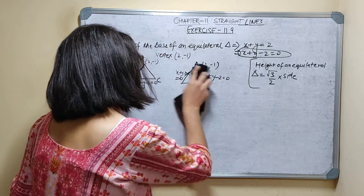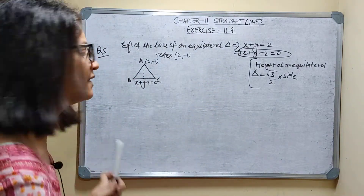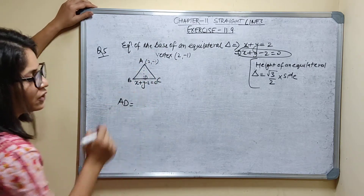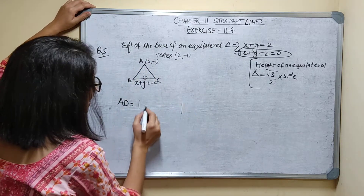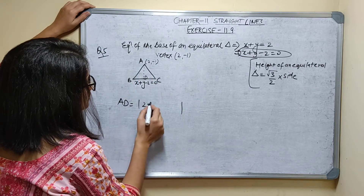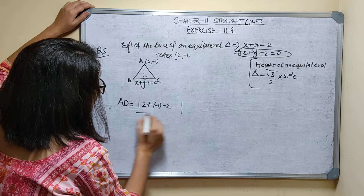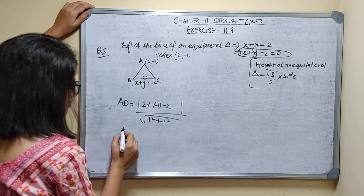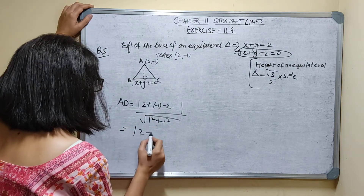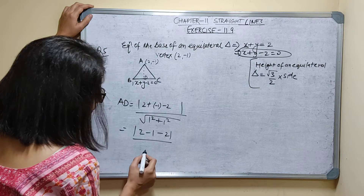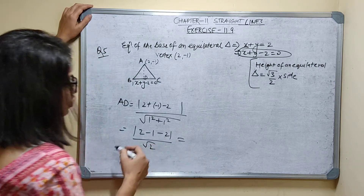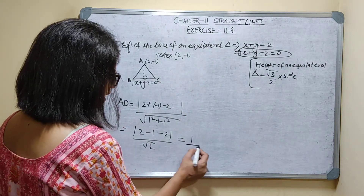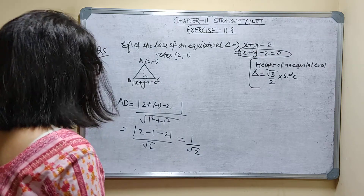Now you can find the height. This is the perpendicular distance from vertex A to point D on the base line. AD equals mod of (x plus y minus 2) evaluated at (2, -1), divided by root of (1 squared plus 1 squared). That gives mod of (2 minus 1 minus 2) upon root 2, which is mod of (minus 1) upon root 2, equal to 1 upon root 2. So the height is 1 upon root 2.